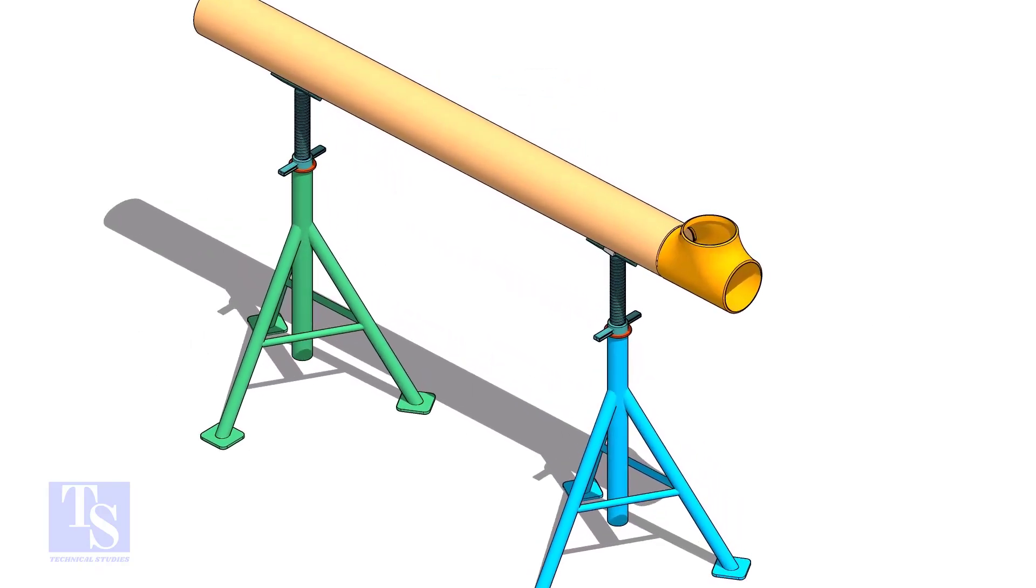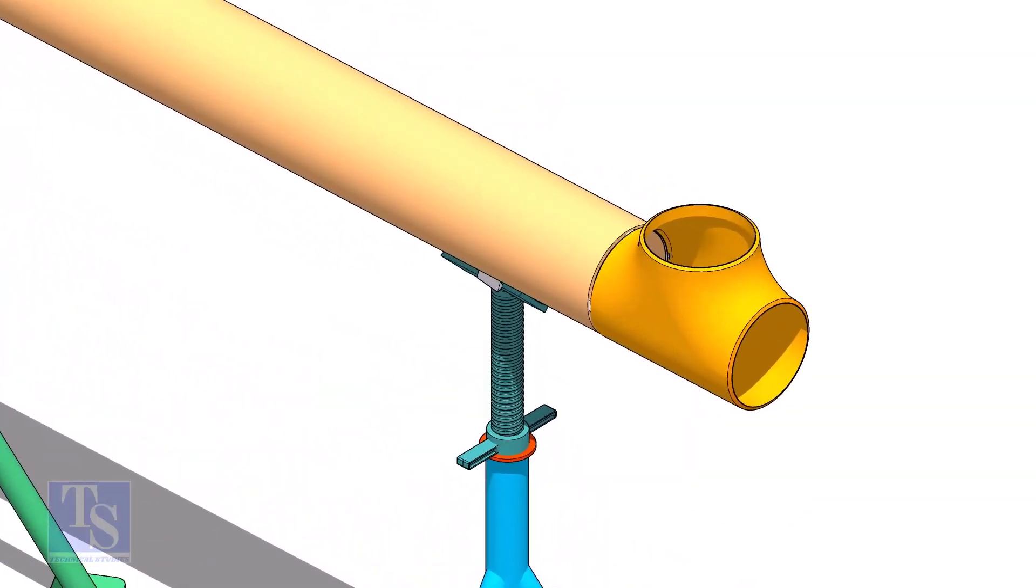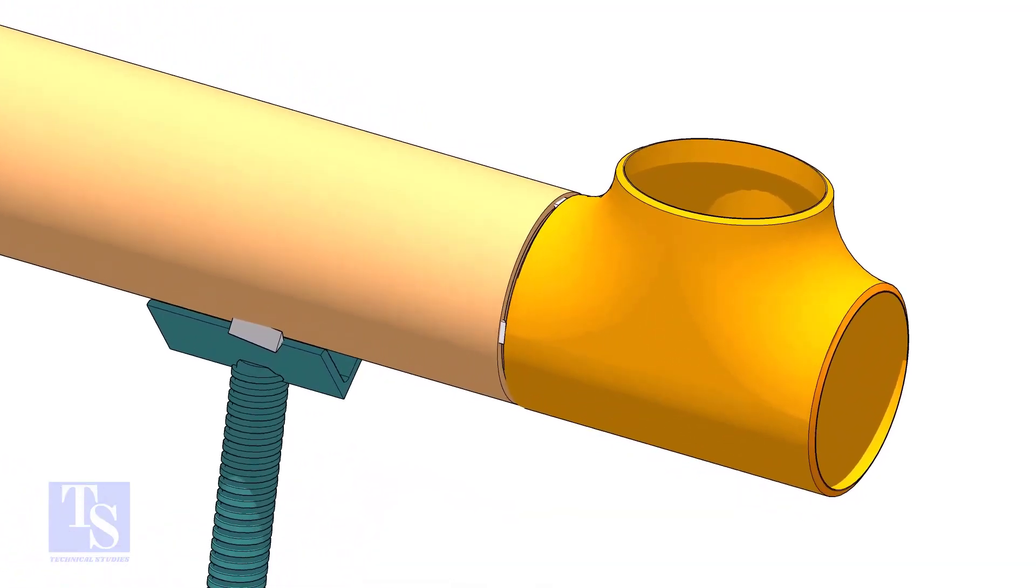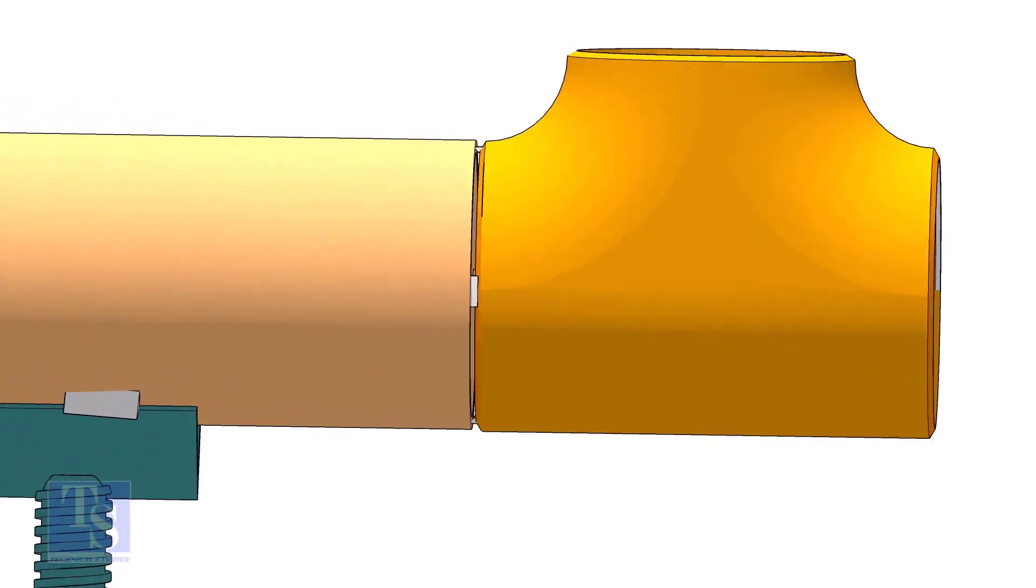To do the fit up easily, tack weld the tee to a piece of pipe of the same size of the tee. Schedule of the pipe is not important. Two or three tack welds are enough.